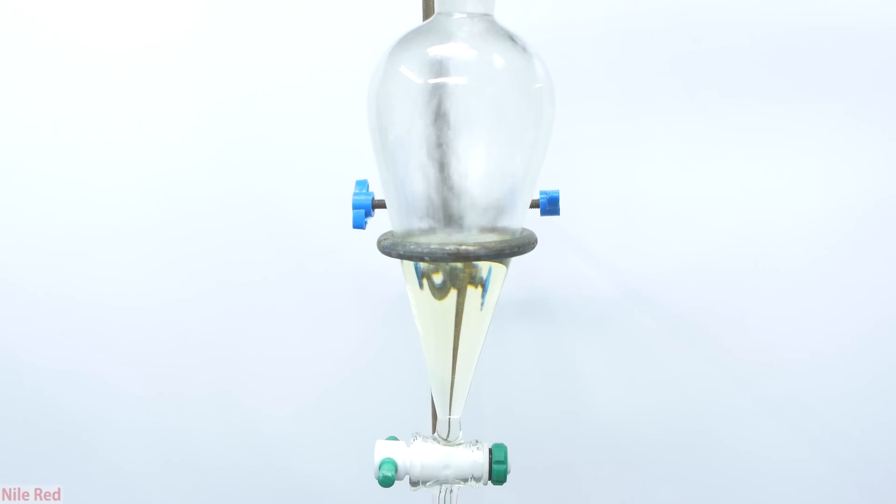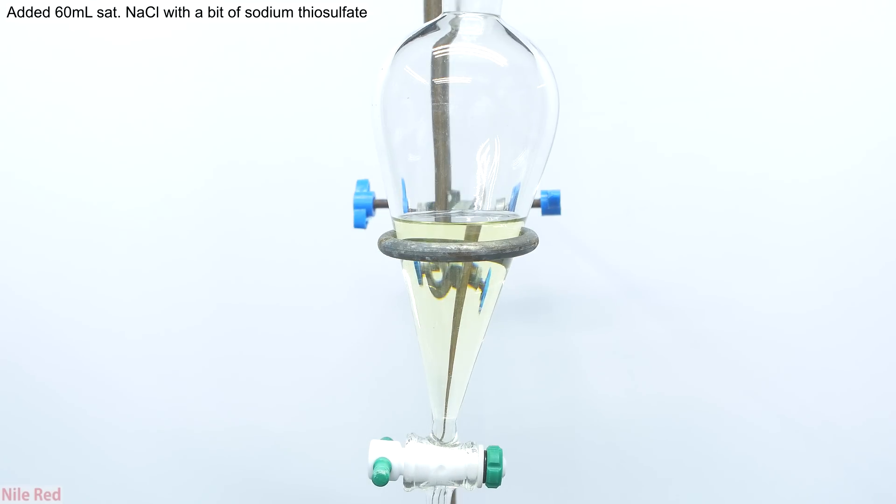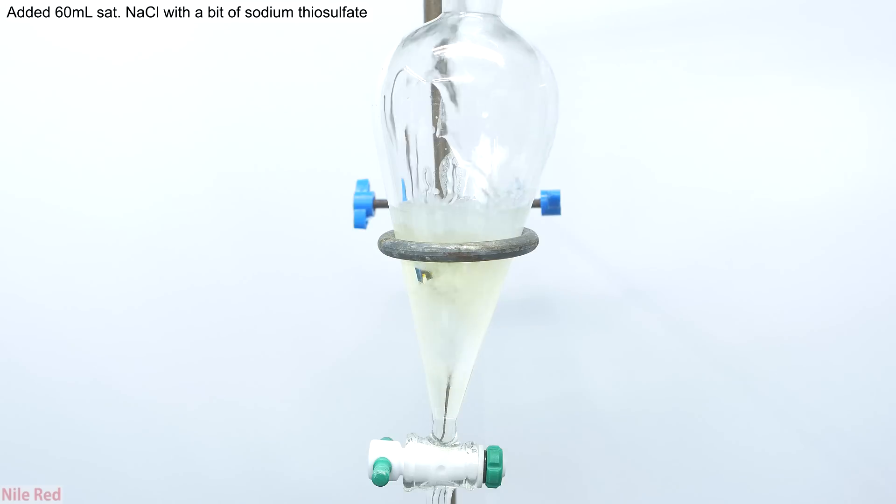This methyl iodide product that we collected is transferred to a separatory funnel. I then added about 60 milliliters of saturated sodium chloride solution which had a small crystal of sodium thiosulfate also dissolved into it. You can see that once it's added, the yellow color of the methyl iodide very quickly disappears. A little bit of iodine is giving it the yellow color, and the sodium thiosulfate reacts with it to form a colorless sodium iodide.